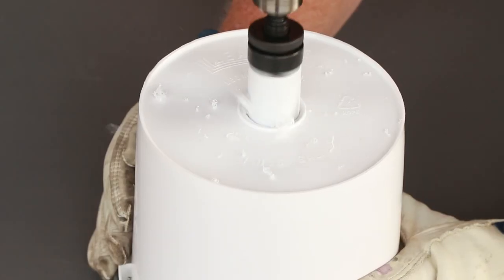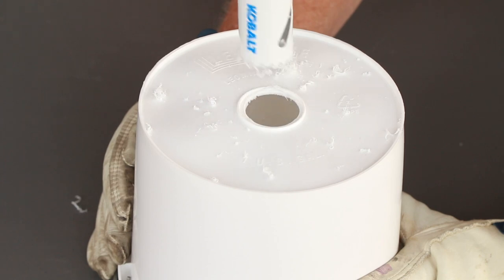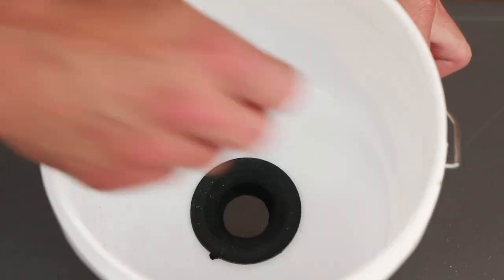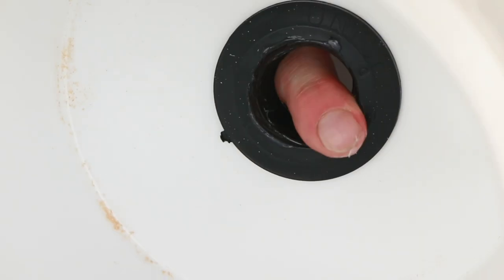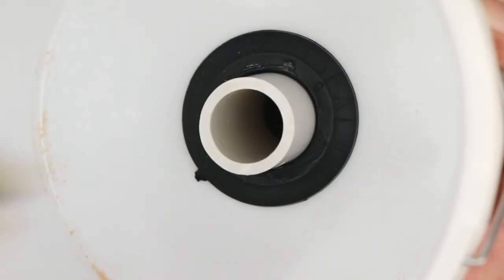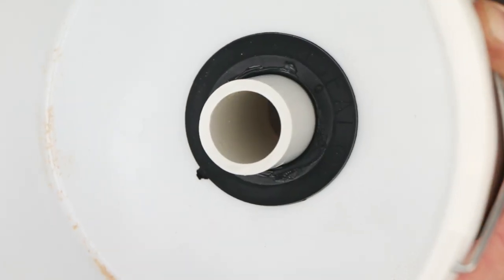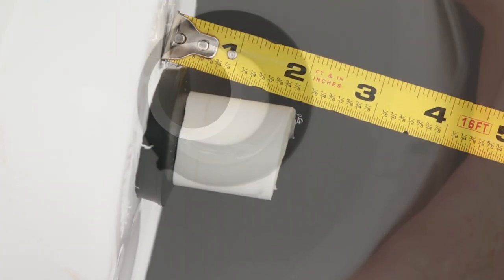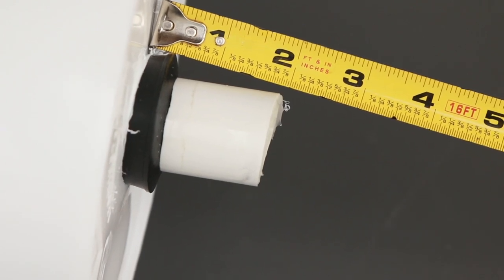Drill a one and three quarter inch hole in the center of the bottom of the one gallon bucket using the electric drill and hole saw. Insert a one inch uniseal in the hole. Lubricate the seal with a silicone lubricant and push the four inch long piece of one inch pipe through the uniseal until there are two inches on the inside and two inches on the outside of the bucket.